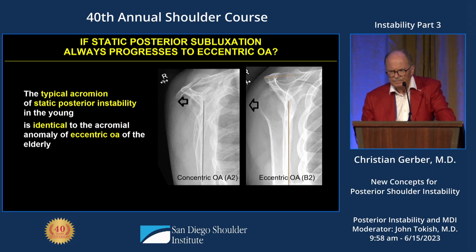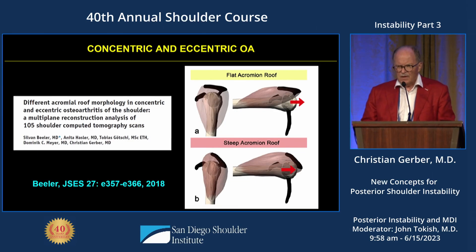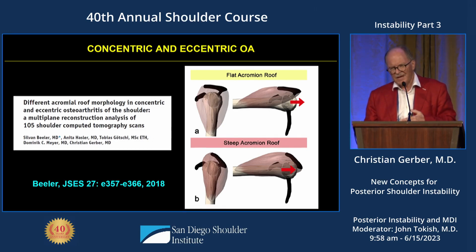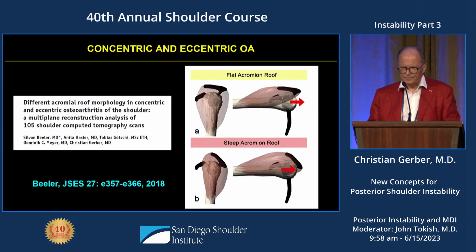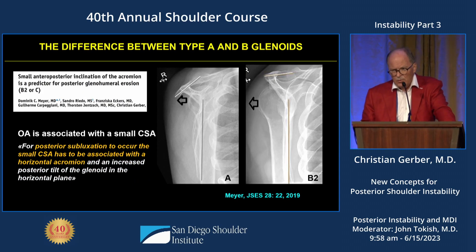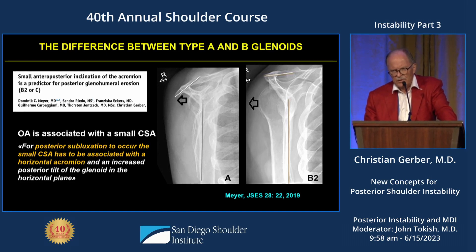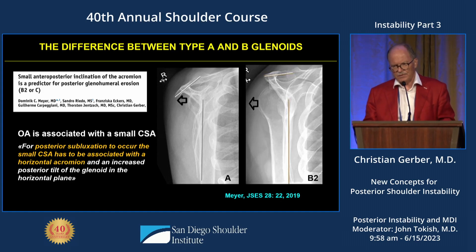Here you see concentric osteoarthritis with a normal acromion, and eccentric osteoarthritis — they have a horizontal acromion. In concentric and eccentric osteoarthritis, the shoulder is not allowed to go back out upon elevation when you have a chalet-type acromion. We know that small anteroposterior inclination of the acromion is a predictor for posterior glenohumeral erosion, and for posterior subluxation to occur, the small CSA has to be associated with a horizontal acromion.